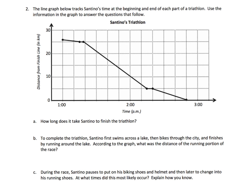When I'm looking at this graph, first thing I'm going to do is look at the title: Santino's triathlon. I'm going to look at the axes, the legends here. This axis down here is time, and I see that it starts at one o'clock and then it looks like it ends at almost three o'clock, so it's not quite two hours. Then the distance is on the side here - it says distance from the finish line.